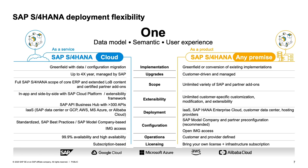Regarding SAP S/4HANA deployment flexibility: the any-premise option gives a classical product with a classical license, installable in your own data center, via hosting, infrastructure as a service, or hyperscaler environments. The other option is SAP S/4HANA Cloud — a public cloud, subscription-based software-as-a-service. S/4HANA Cloud always requires a greenfield implementation, while on-premise offers different transition options. Differences exist in upgrade frequency, functional scope, extensibility, deployment, configuration, custom code usage, and system operation.